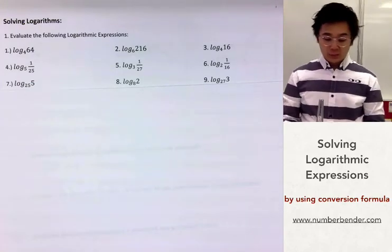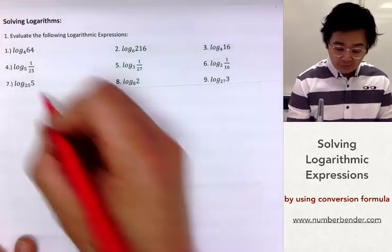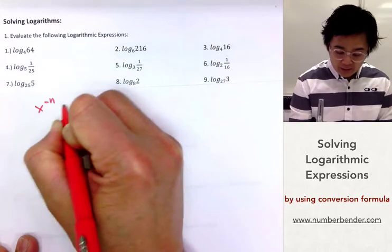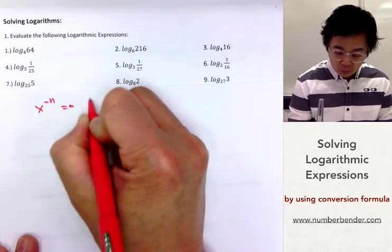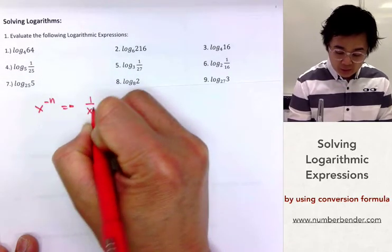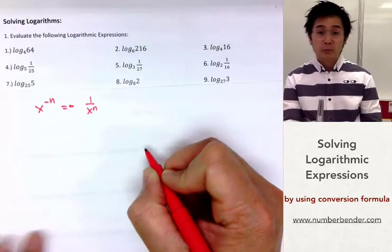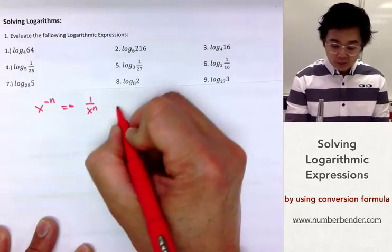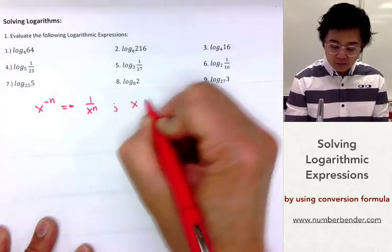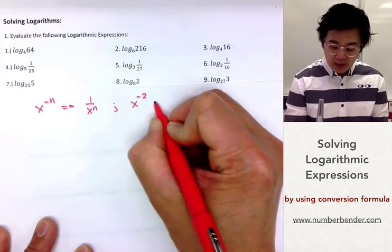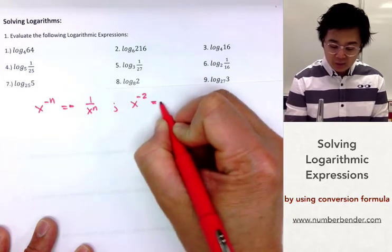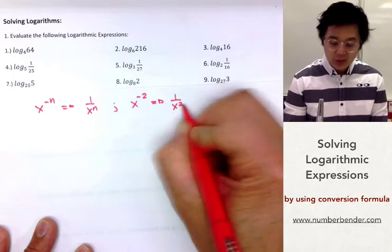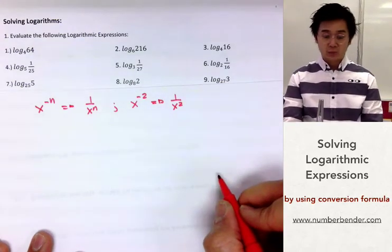We know that in the law of exponents, if we have x raised to negative n, we can change it into 1 over x raised to n, so our exponent will change into a positive number. So if I have x raised to negative 2, I can change it into a positive exponent by using the law, giving us 1 over x squared.